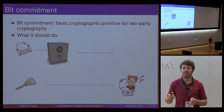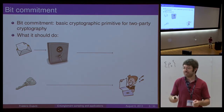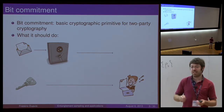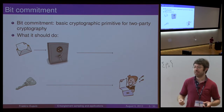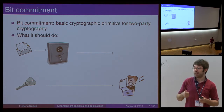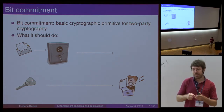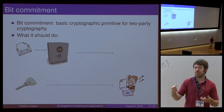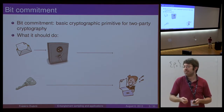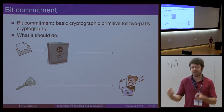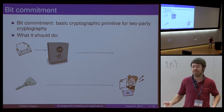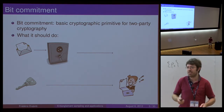In the committing phase, the sender wants to take a message — the letter up here — put it into a safe, lock the safe, and then send the safe over to the receiver. Then in the reveal phase, you would send the key to the safe so that the receiver can open the message. You want to satisfy two properties: once the sender is committed, the receiver is not able to immediately receive the message — the safe is locked — and you also want to make sure that after the sender is committed, they're not able to change the message.